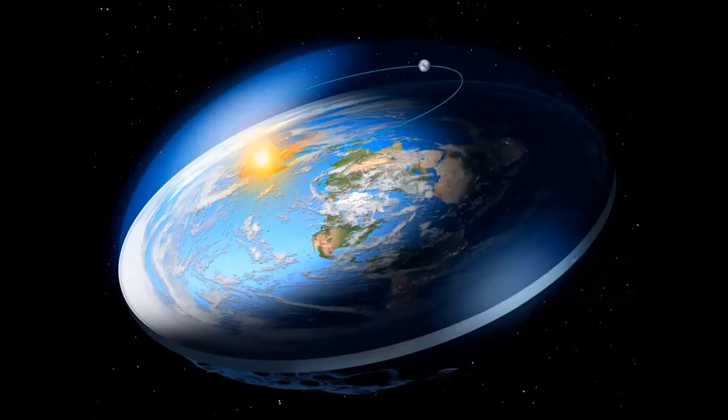The earth has the shape of a flat disk with a diameter of 40,000 kilometers, in the center of which is the north pole. The south pole does not exist at all, and what we call Antarctica is a mountain of ice that stretches along the edge of the earth, surrounding it.